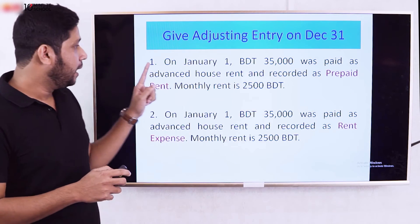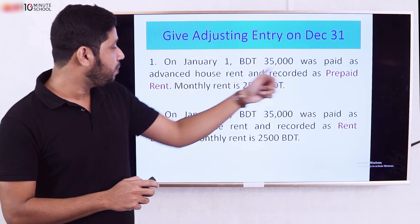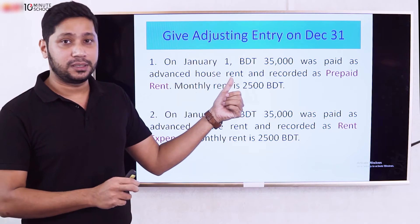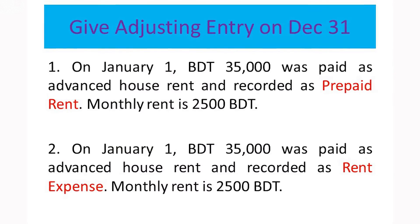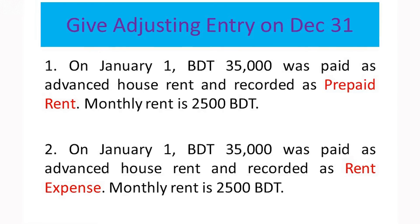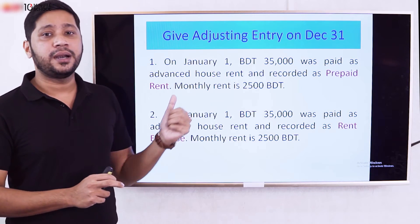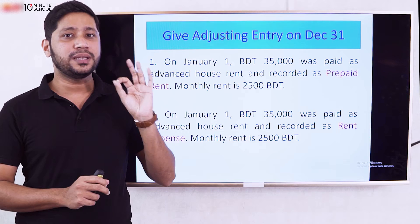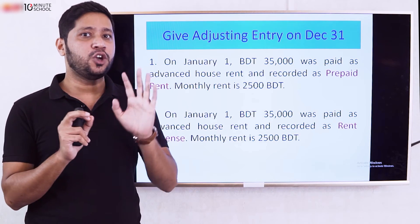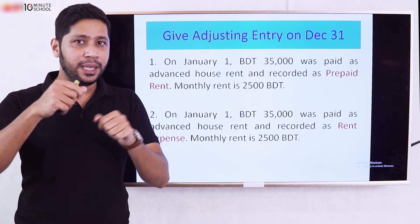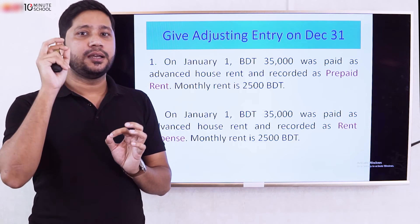Let me work through a similar problem. On January 1st, $35,000 was paid as advance house rent and recorded as prepaid rent. The monthly rent is $2,500.